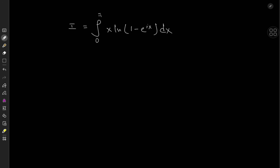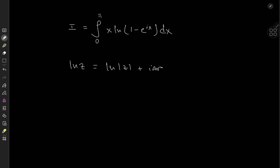So let's recall what the logarithm of a complex number is, because that's really interesting. The logarithm of a complex number z — specifically the principal logarithm — equals the logarithm of its absolute value plus i times its principal argument. Now in this case, I have z equal to 1 minus e to the ix. So I'm going to be interested in its modulus and its argument.